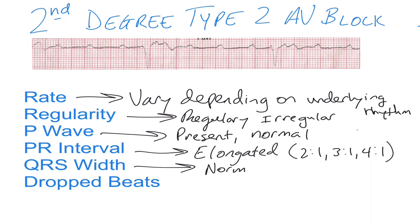The QRS width is going to be normal, and we do have dropped beats — multiple dropped beats. Up here you can see one P wave, two P waves, three P waves, then a QRS, and then it repeats. So if you have a varying rate, a regularly irregular rhythm, with a 2-to-1, 3-to-1, or 4-to-1 P wave to QRS ratio, there's a very good chance you're looking at a second-degree type 2 heart block.